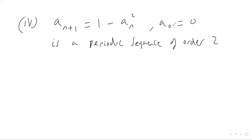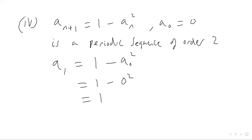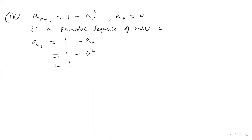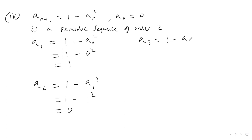Now let's look at the recurrence relation. We have an iterative formula with the first term a0 equal to zero. Using the formula, a1 equals one minus a0 squared, which is one minus zero squared, giving us one. Then a2 equals one minus a1 squared, which is one minus one squared, giving us zero. So we're already starting to repeat.